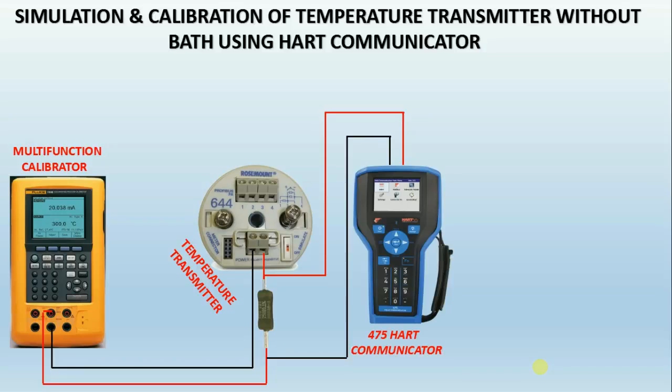Typically, temperature transmitters isolate, amplify, filter noise, linearize, and convert the input signal from the sensor, then send and transmit a standardized output signal to the control device. Common electrical output signals used in manufacturing plants are 4 to 20 milliamps.